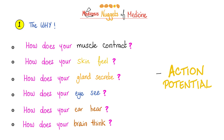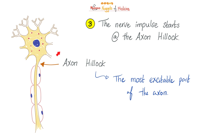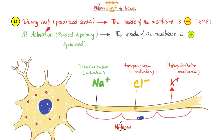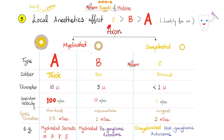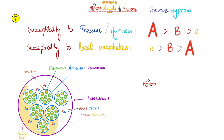Nugget 1: Why do you need action potential? Because it's life. Inside your body, the nerve impulse is unidirectional, starting from the axon hillock. During rest (the polarized state), the inside of the membrane is more negative, but upon depolarization, the inside becomes more positive as sodium enters. Local anesthetics affect type C fibers before type B, before type A. Hypoxia affects type A fibers first. Chronaxy is the time needed by a current whose intensity is double the rheobase to excite the nerve.